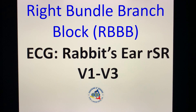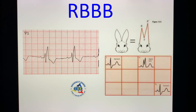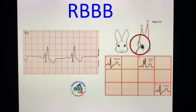Now another case: you have an ECG and it revealed the famous rabbit's ear pattern, or the RSR pattern in leads V1 to V3. Your diagnosis would be right bundle branch block — RBBB. My personal mnemonic: RBBB sounds like RBB — Rabbits — so it's your rabbit's ear. Look at the RSR pattern and look at the ears of the rabbit. RSR equals RBBB.